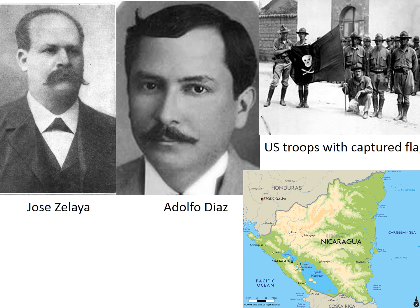When the Nicaraguan people, upset with Diaz for allowing all this, then revolted against him, Taft sent in 2,700 Marines to suppress the uprising. In the end, the Marines had to occupy the country for many years because anti-American sentiment remained very high.